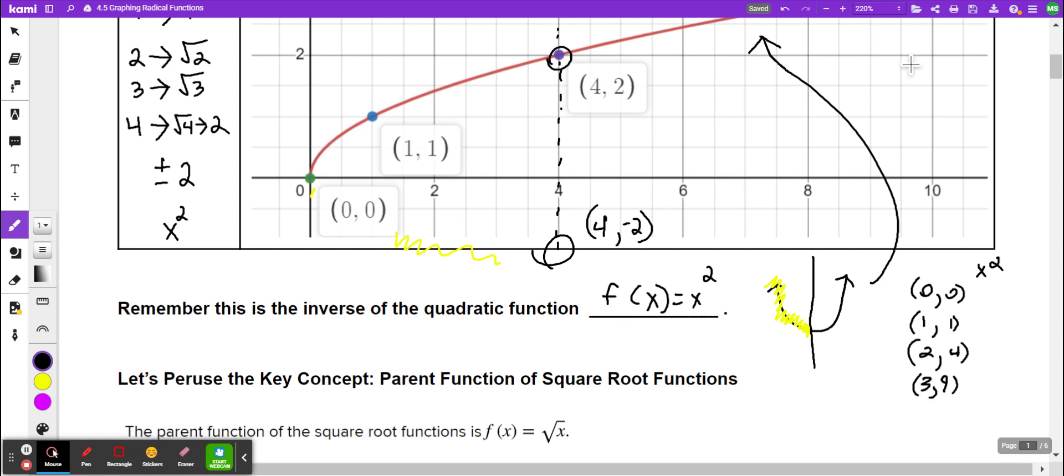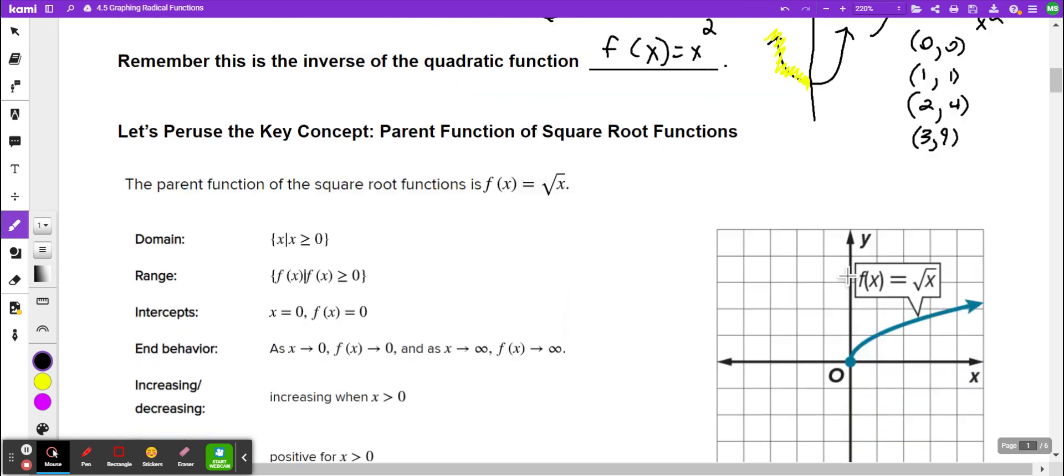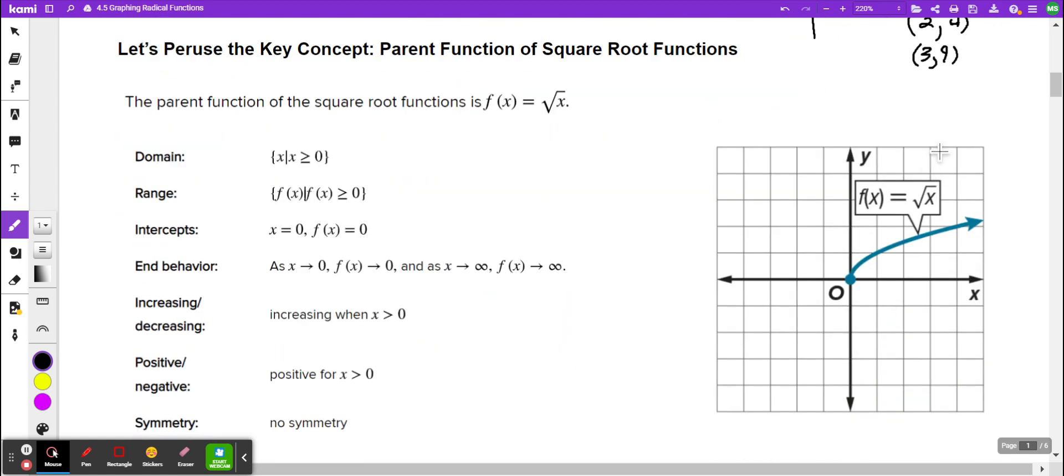So the parent function of this square root function right here has a domain of x being greater than or equal to 0. What does that mean? That means at this point, it's going to include this right here. So starting here, we're going to go to the right and include everything. It's going to go forever. So starting right here, it's going to go forever to the right. So that's our domain.